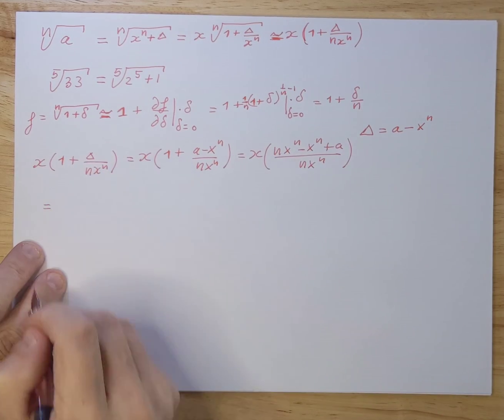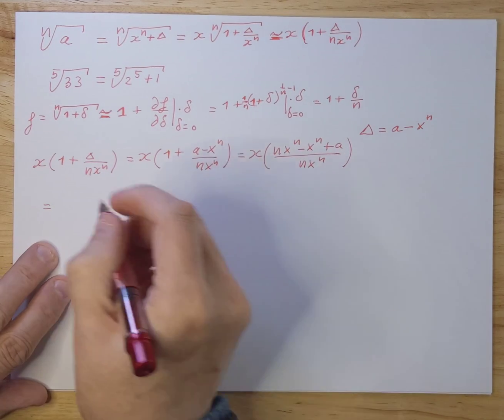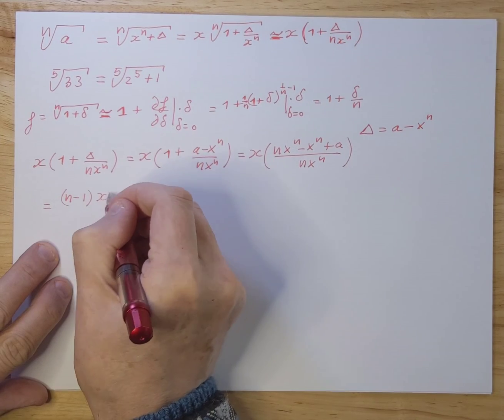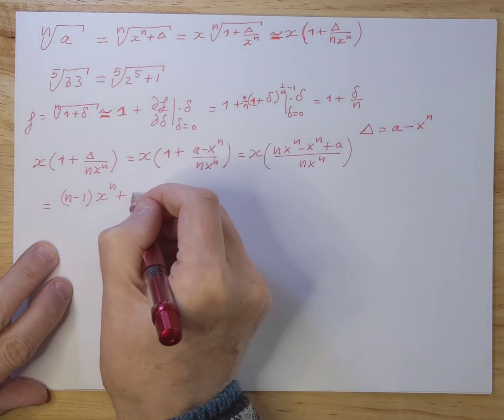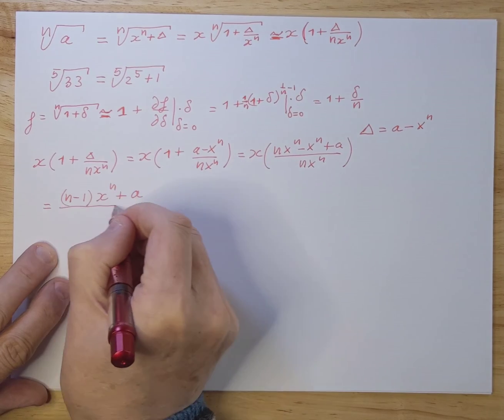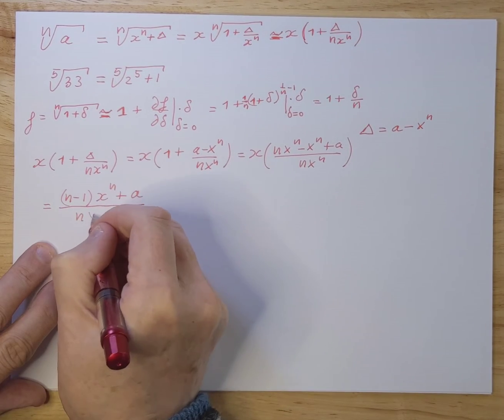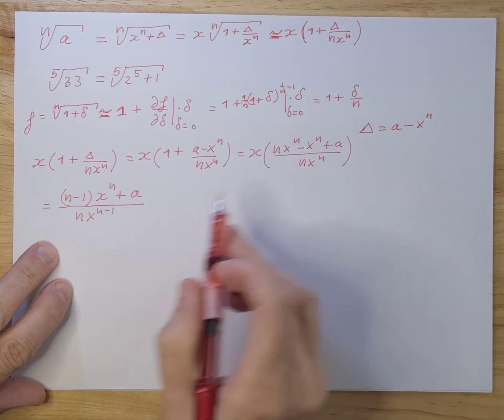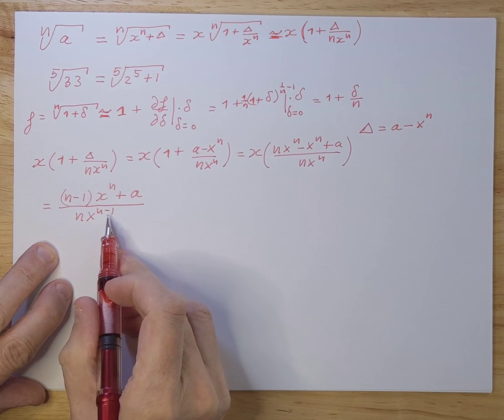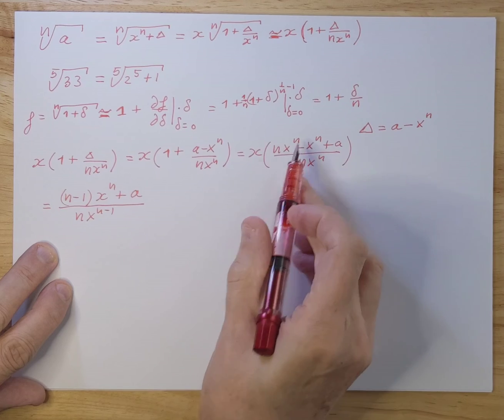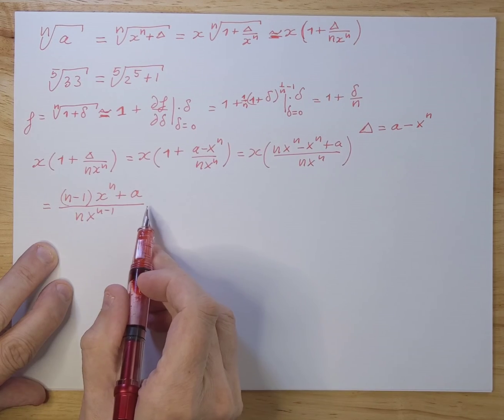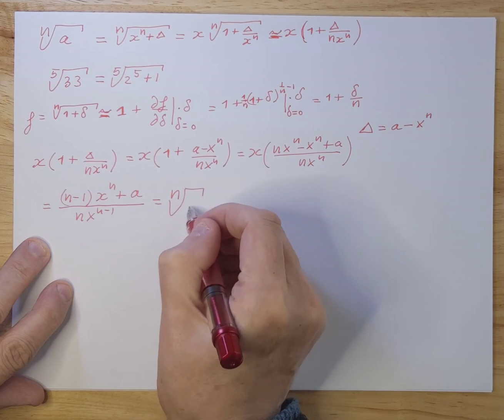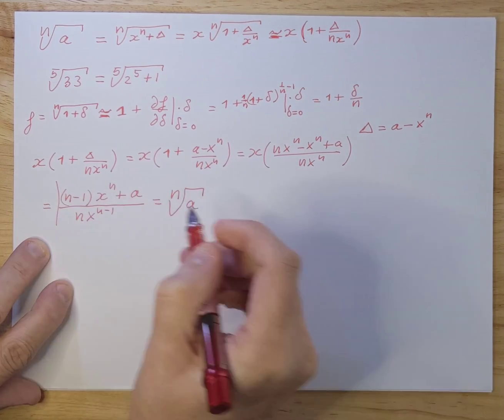And we can work that out a little bit more, of course, and we can say that it's n minus 1 to the power of xn plus a divided by nxn minus 1. And then I combined this with this, that gives you n minus 1. And here I just did a subtraction, I took out x to the nth and you get this. So this is then, by good approximation, the nth root of a.